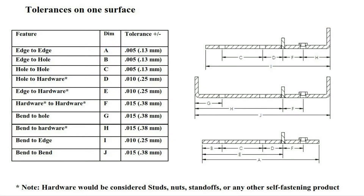As we look at tolerances as they relate to one surface on this chart, a tolerance of plus or minus five thousandths from edge to edge, labeled A, is achievable. Notice that when one bend is introduced, the tolerance is increased to plus or minus ten thousandths, noted I on this chart, and opens up to fifteen thousandths when measuring bend to bend, as noted J.